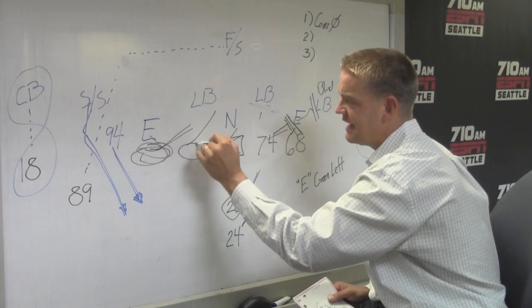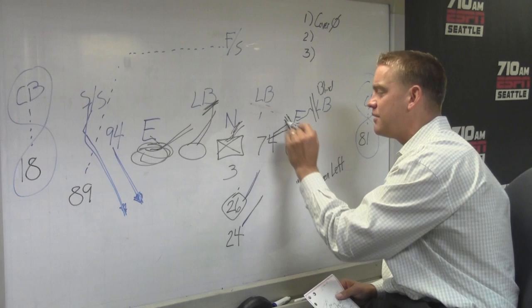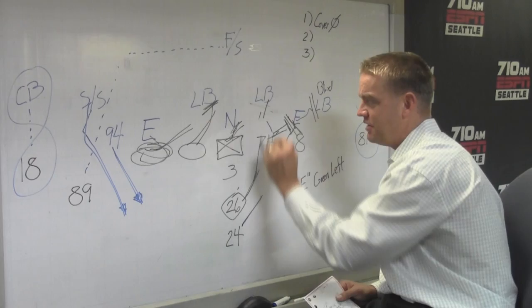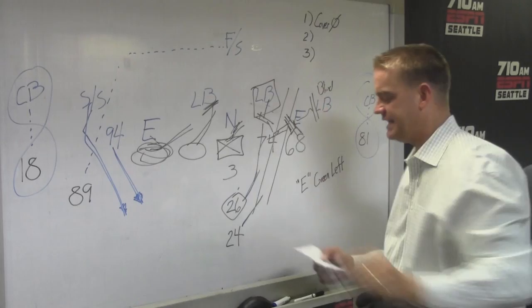The left tackle does a nice job. McQuiston hangs on to Carter enough. Unger does a nice job on the nose. Moffitt not only pushes at the point of attack in the zone concept, he can feel the linebacker, nudges him, and you actually get a double team on this linebacker, creating that crease for Marshawn and that's all he needs.